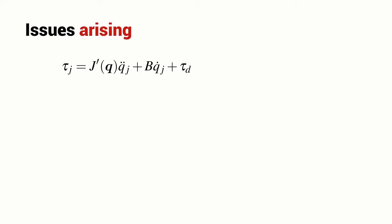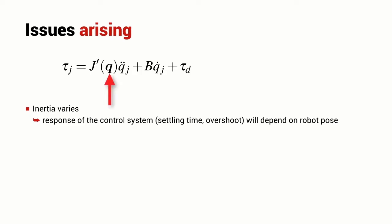So what are the issues that arise from this? Well, firstly, we have an issue because the inertia experienced by the joint varies with the configuration of the robot. In the last lecture, we tuned our controller so that it had a nice response in terms of settling time and overshoot but the tuning was a function of the particular values of inertia and viscous friction. Now what we're saying is that the inertia that the joint controller sees is a function of the configuration. It depends on all of the joint angles and so that means that the response of the control system will depend on the robot's pose.